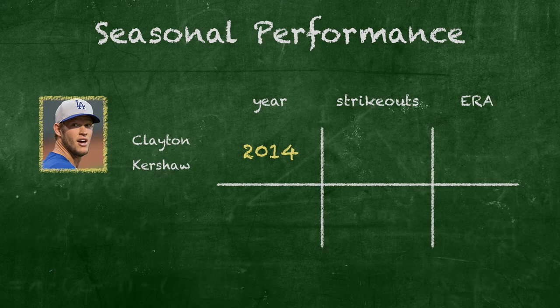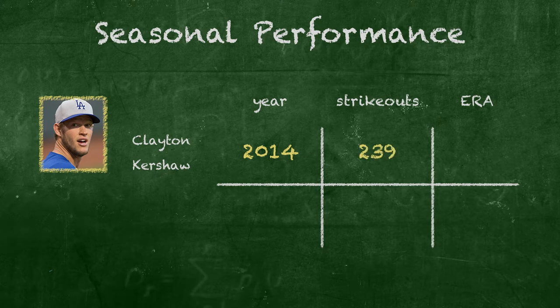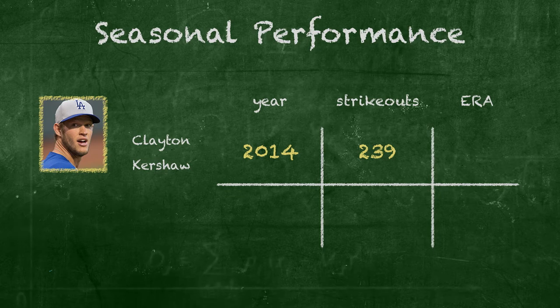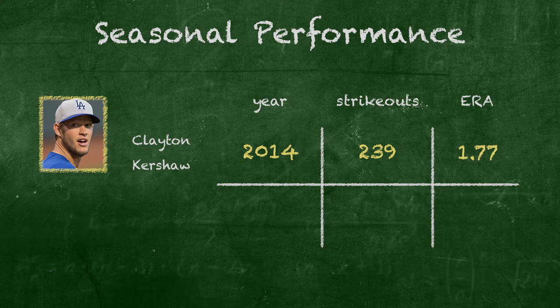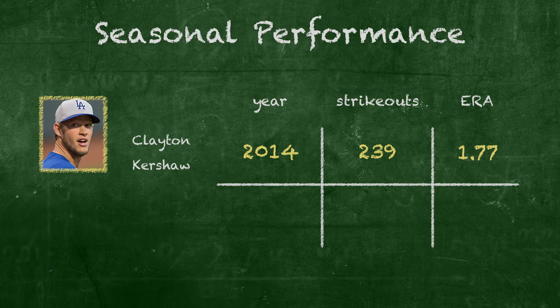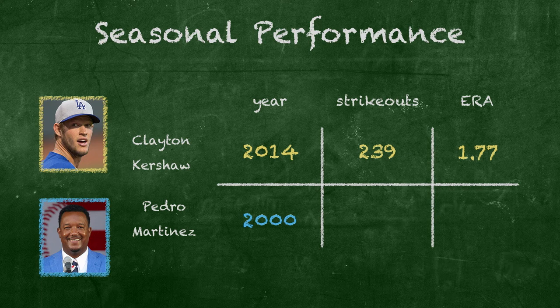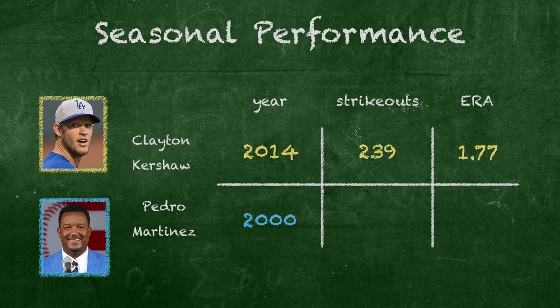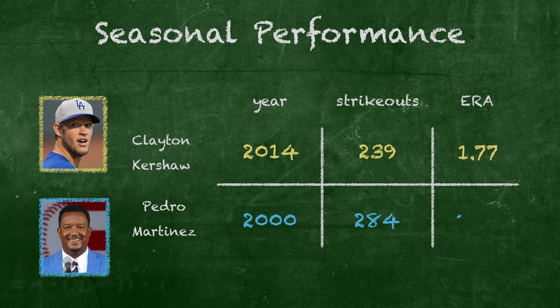Clayton Kershaw of the Los Angeles Dodgers had an amazing pitching season in 2014, striking out a stunning 239 batters, and as such, shrinking his earned run average down to a shrimpy 1.77. It was one of the greatest single-season pitching performances in recent history, drawing comparisons to Pedro Martinez's stellar 2000 season when the Red Sox's ace struck out 284 batters, earning him an ERA of 1.74.